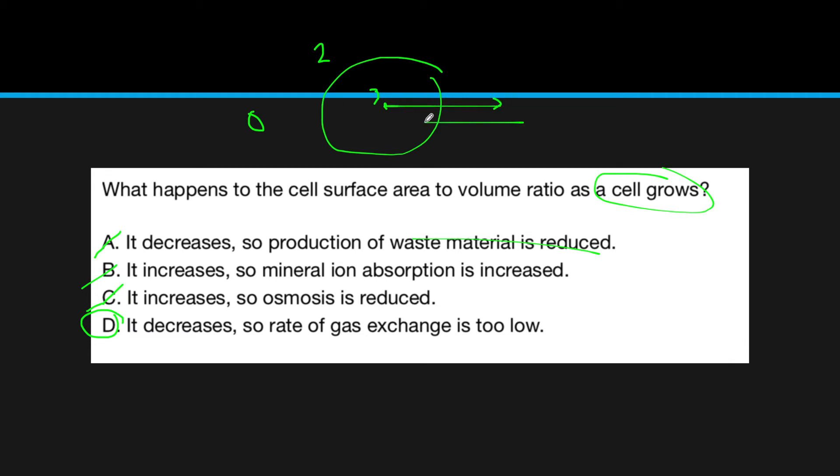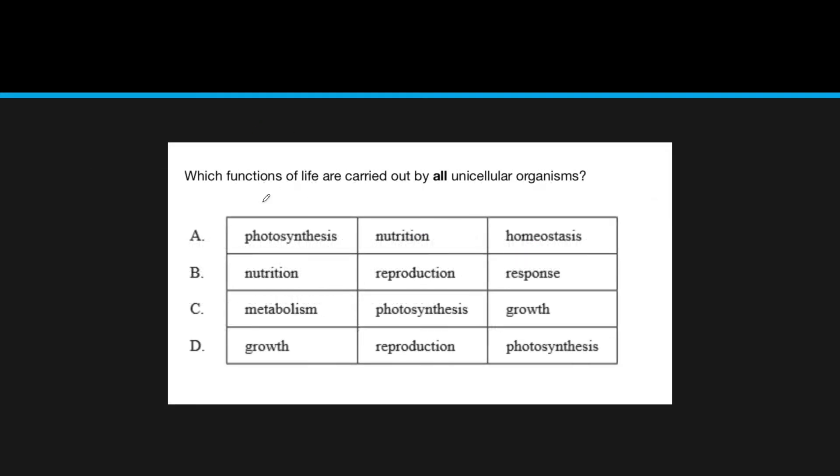Here's another example question. What functions of life are carried out by all unicellular organisms? Right off the bat, if you look through this, you'll see photosynthesis is in these three answer choices. Photosynthesis is not required—we humans, for instance, don't undergo photosynthesis. So that tells you all these three are incorrect and it is in fact B.